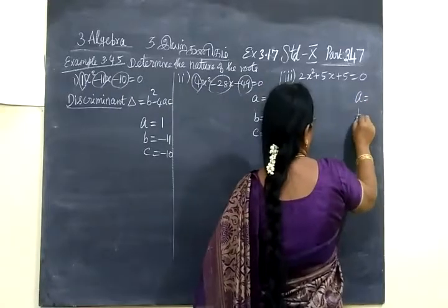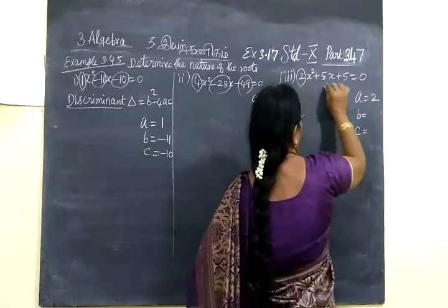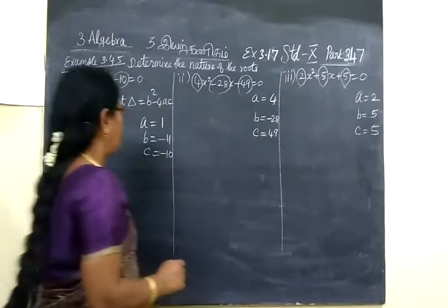Then A equal to, B equal to, C equal to. A equal to 2, B equal to 5, then C equal to 5. Now, come to the problems.